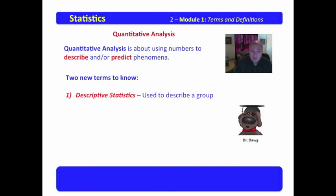Now, there are two terms that you need to add to your vocabulary. You have first quantitative analysis from our last discussion: quantitative analysis is about using numbers to describe and or predict phenomena. But your new terms are, first, descriptive statistics. Descriptive statistics are used to describe a group. The next term is inferential statistics. Inferential statistics is about describing a part to infer facts about the whole.